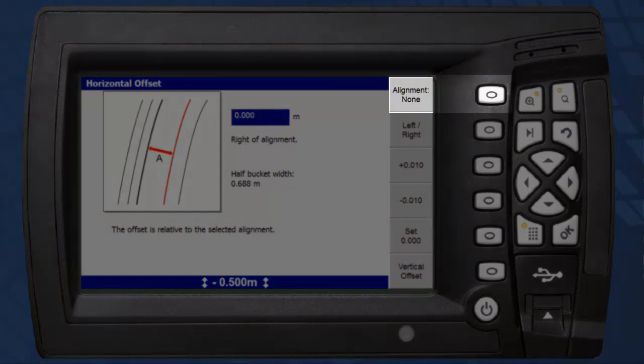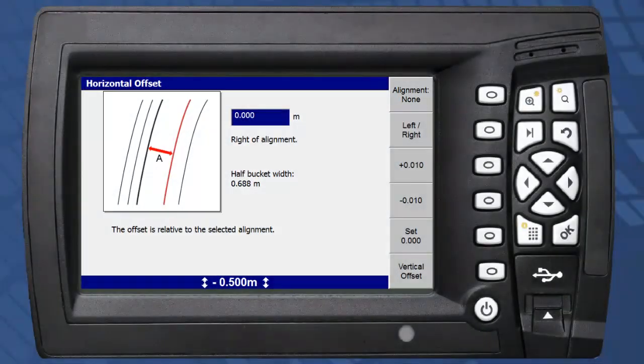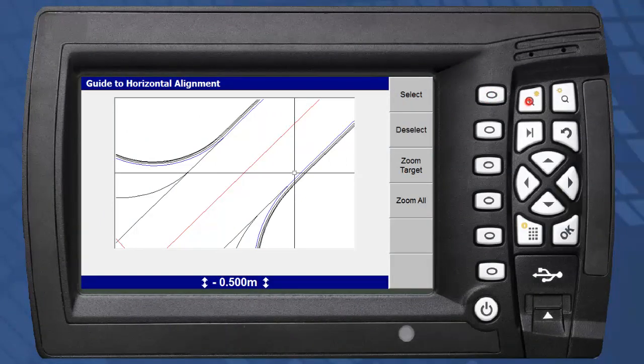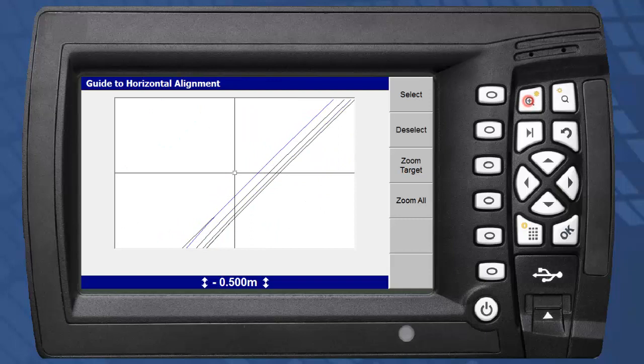The alignment soft key will access the plan view, from which a line can be selected. Note the zoom keys will apply as they do in the regular plan view. Using the arrows, the cursor is guided to a desired line.